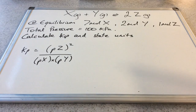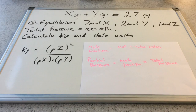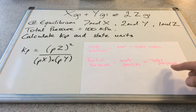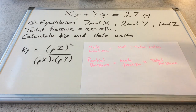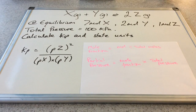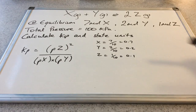To get the partial pressures, we need to know the mole fraction and the total pressure — multiply them together to find the partial pressure of each component. We've got the total pressure, and we can calculate the mole fractions from the number of moles and total moles. The mole fraction of X is 0.7, Y is 0.2, and Z is 0.1. Quick check: the mole fractions must add up to 1, and of course they do.